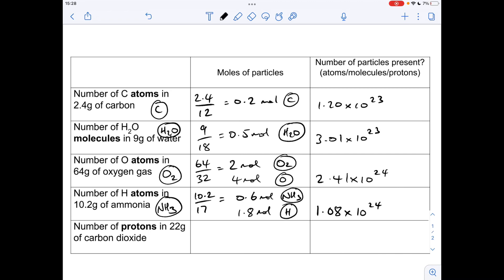Final one, number of protons in 22 grams of carbon dioxide. Obviously CO2 molecule is carbon dioxide. So we'll work out how many moles of that we've got first. 22 over 44 is the MR of CO2. So we've got 0.5 moles CO2 molecules.